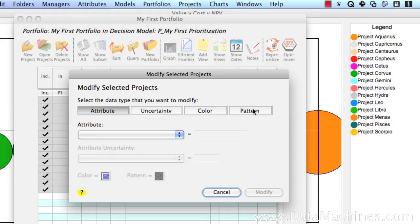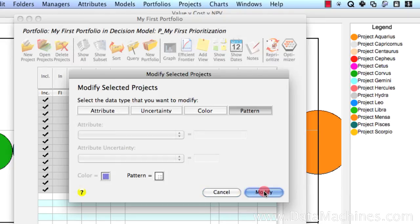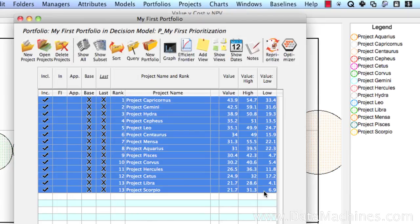In this case, we're going to modify the pattern of the subset of projects that were rejected in the optimization. We'll click on the Pattern tab and then go to the Pattern pop-up menu and select a different pattern and then click Modify. Then we return to the Portfolio form and click Show All at the top of the form to display all the projects again.